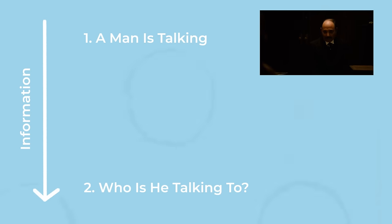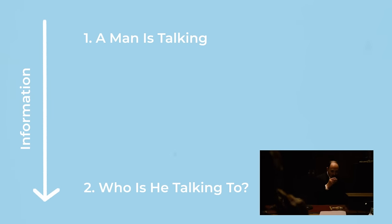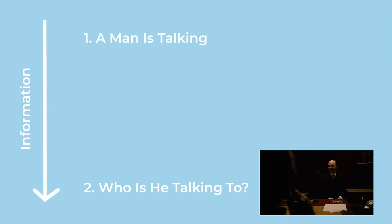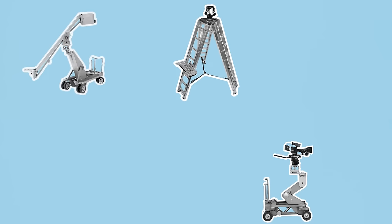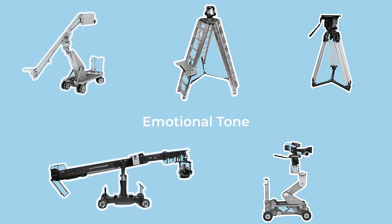The way in which information on screen is presented, and in what order that information is presented, can also be controlled by the motion of the camera. So today I'll look at four common types of camera movement, go over how they are technically achieved with what gear, and uncover how each can be used to communicate different emotional tones.